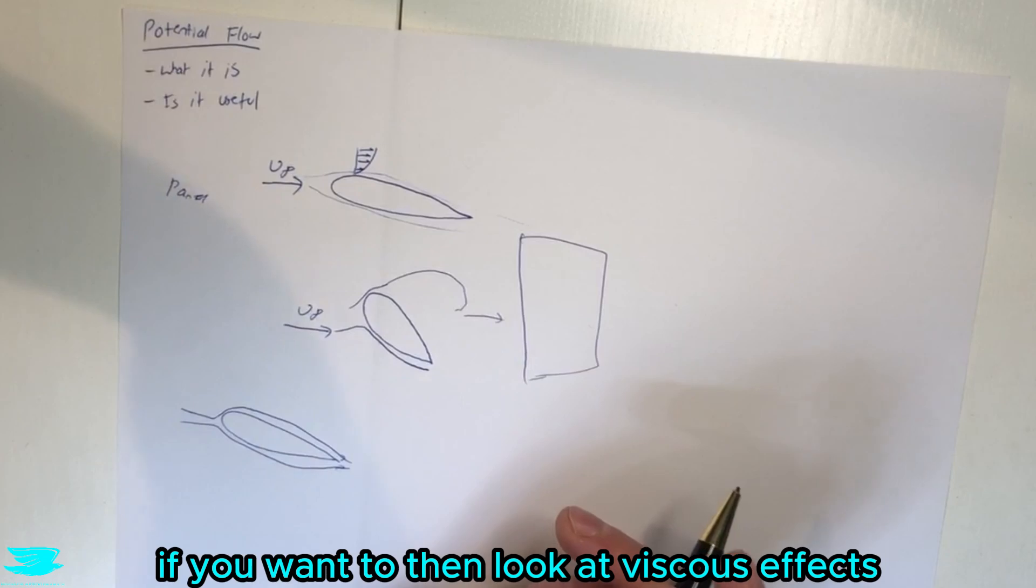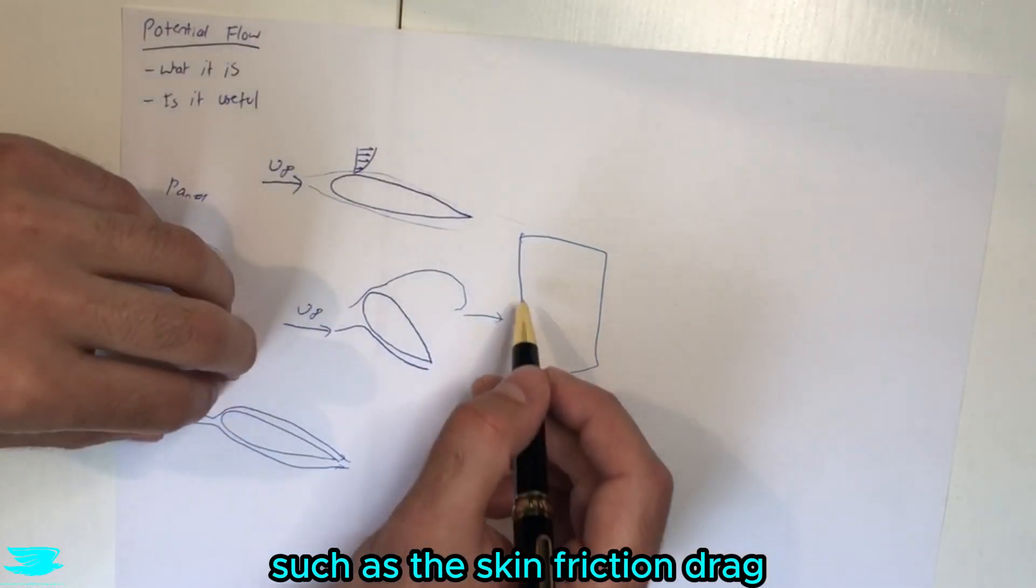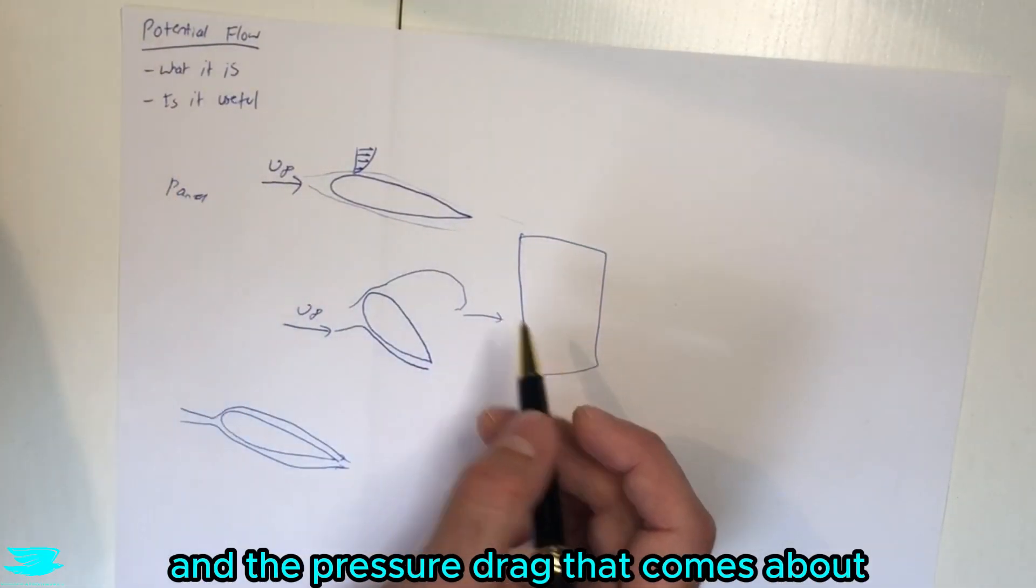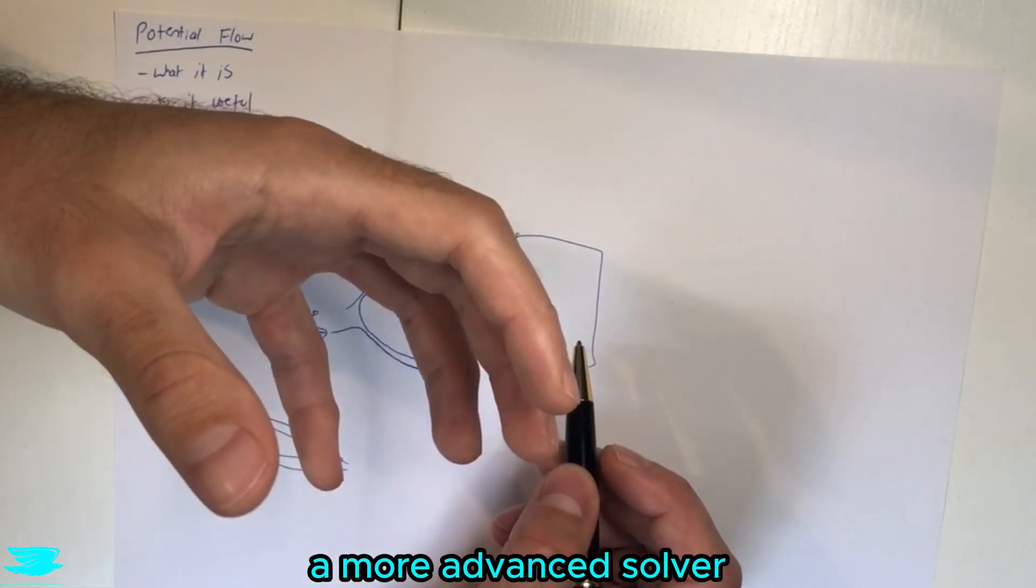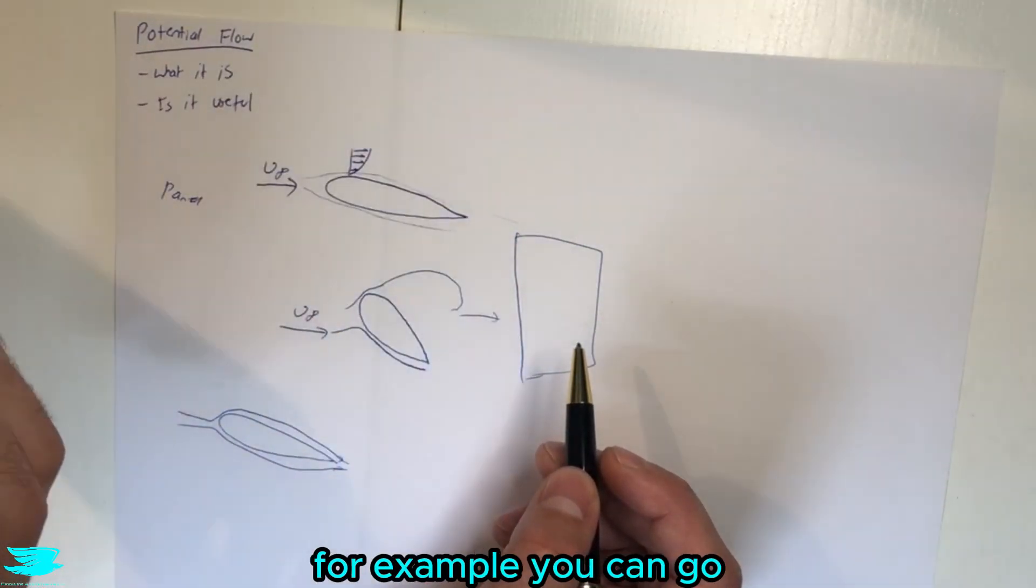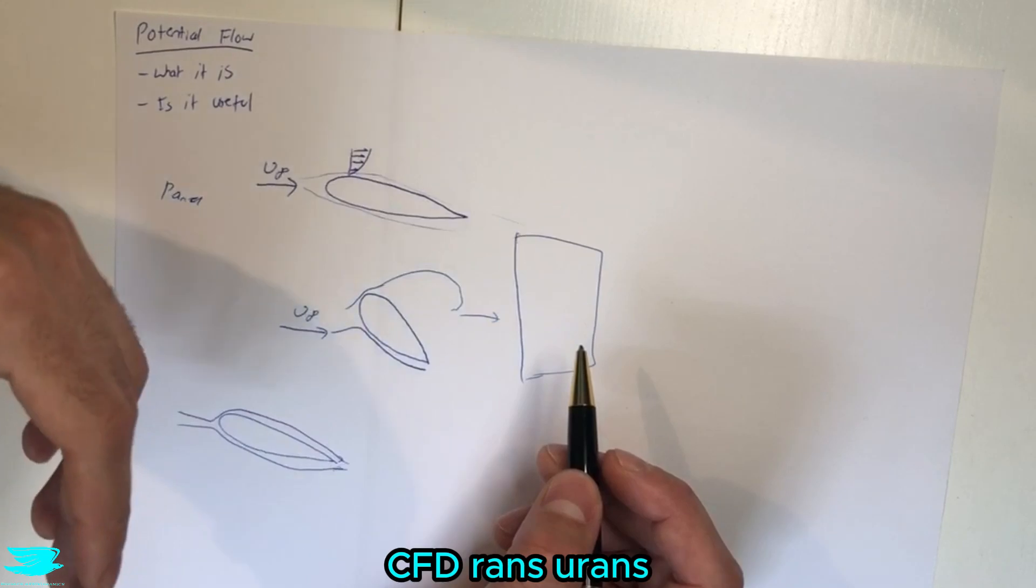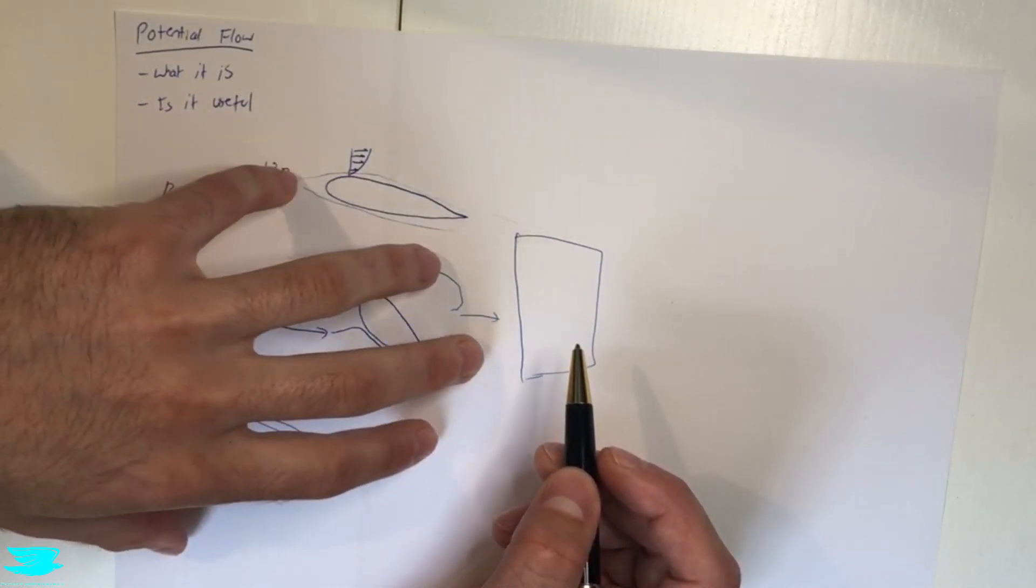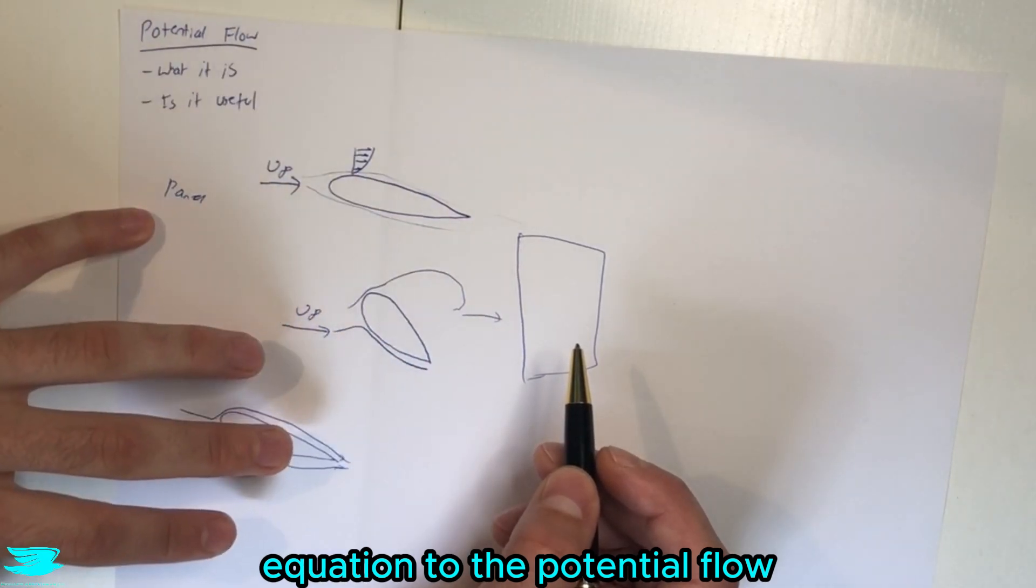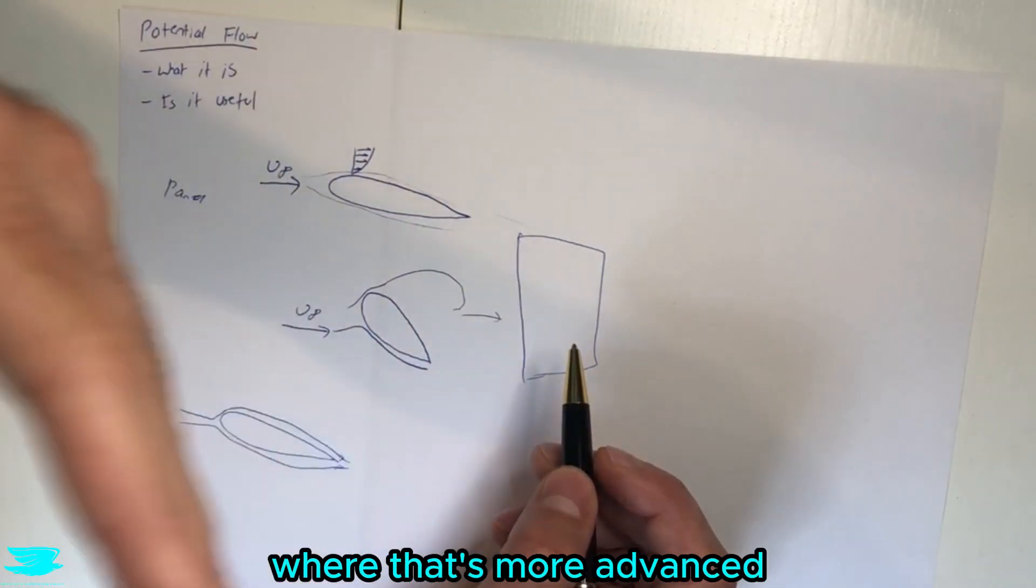If you want to then look at viscous effects such as the skin friction drag and the pressure drag that comes about for example in the wake, then you need to move to a more advanced solver. For example you can go to a regular Navier-Stokes CFD RANS, whatever, or you can couple a viscous equation to the potential flow and then run it from there - that's more advanced.